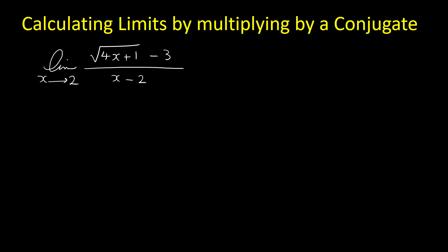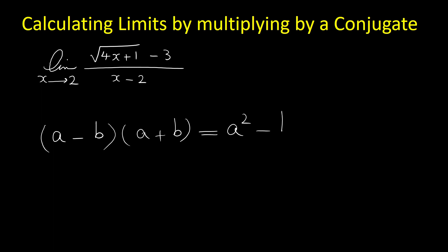To find this limit we have to get rid of the radical in the numerator by multiplying the top and bottom by the conjugate of the top. When we have A minus B, the conjugate is A plus B, and vice versa. When we multiply them together it equals A squared minus B squared, and because A and B have radicals, by squaring them we can get rid of those radicals.